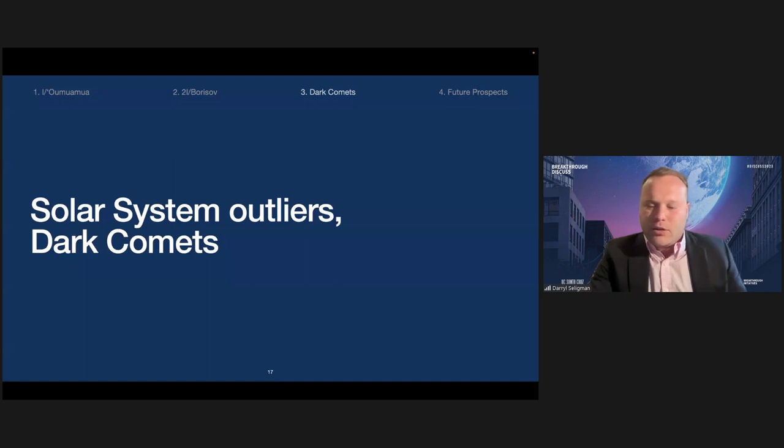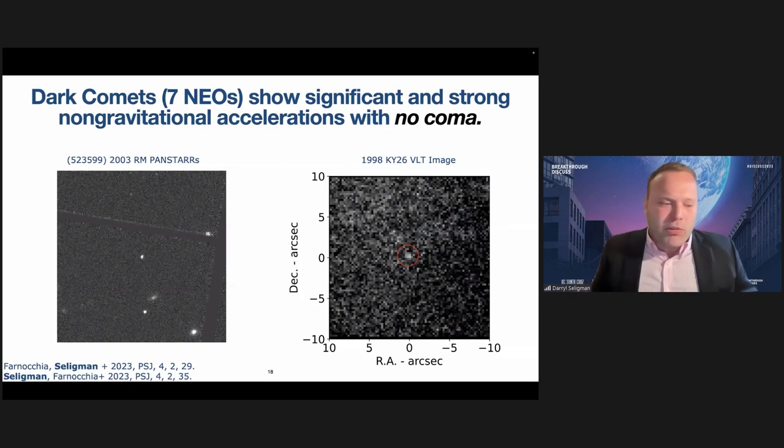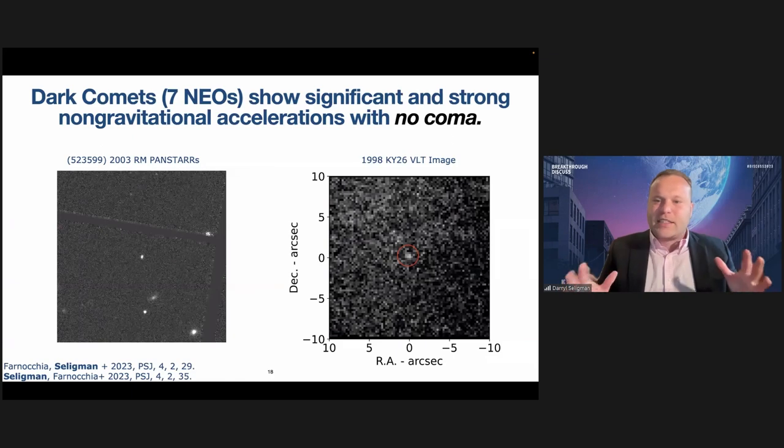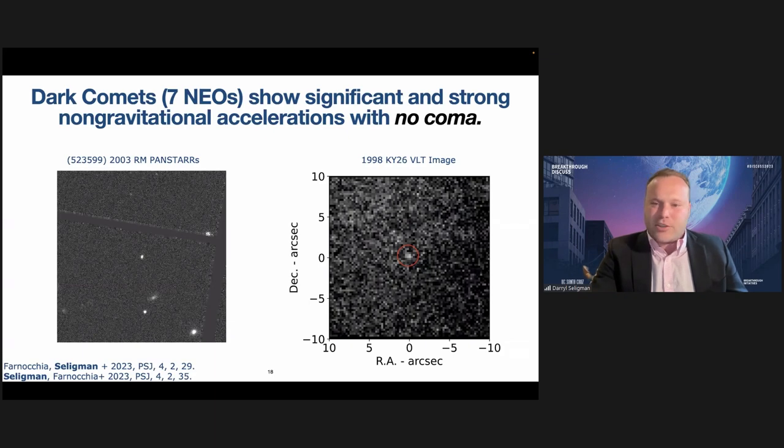Now I'm going to change gears a little bit and talk about these recent objects that we discovered, these native solar system objects, these dark comets. We only published the papers announcing their discovery a few months ago. I really want to make the point that these objects, while they share some of the mysterious properties of 'Oumuamua, we do think that they are a different type of object. But it's still something mysterious that we can't explain currently with our current theories and need follow-up observations, potentially in-situ observations, to get a handle on what's going on. There are these seven near-Earth objects we discovered that also, like 'Oumuamua, have significant non-gravitational accelerations without any detectable cometary activity.